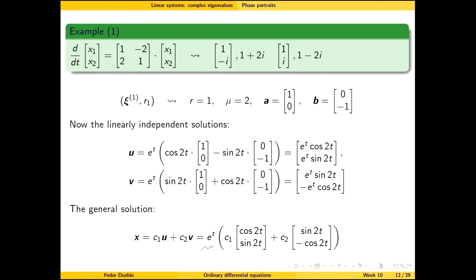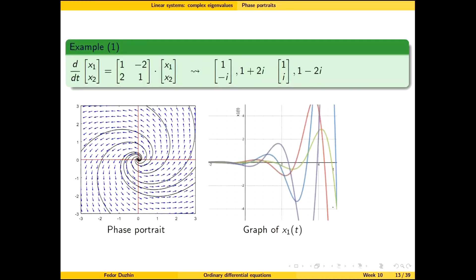Notice that the solution contains e^t. As t approaches infinity, e^t also approaches infinity, while cosine and sine produce oscillations. So both x1 and x2 undergo oscillations of magnitude that increases exponentially over time. This is visible in the graph of x1(t) versus t — and x2(t) versus t would look very similar.